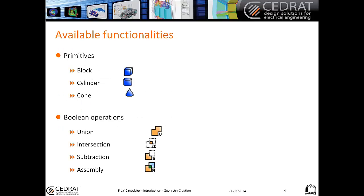The available functionalities of the 3D modeler are as follows. First, the primitives: we have block, cylinder, and cone. You can also use boolean operations such as union, intersection, subtraction, and assembly.